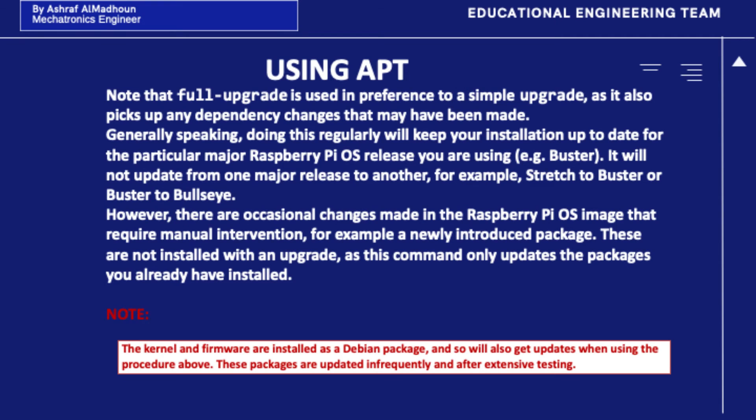Note that full-upgrade is used in preference to a simple upgrade as it also picks up any dependency changes that may have been made. Generally speaking, doing this regularly will keep your installation up to date for the particular major Raspberry Pi OS release you are using. It will not update from one major release to another — for example, Stretch to Buster or Buster to Bullseye. However, there are occasional changes made in the Raspberry Pi OS image that require manual intervention, such as a newly introduced package.